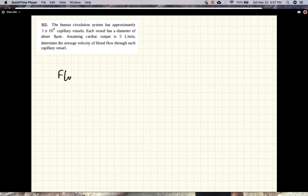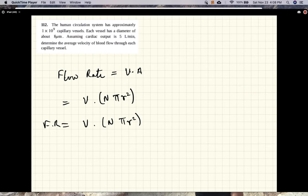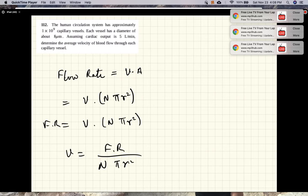Flow rate is velocity times area of cross-section. The blood is split into a billion capillaries with diameter of 8 micrometers. So flow rate equals the velocity times n times the cross-sectional area of each capillary. Therefore, velocity equals flow rate divided by n times pi r squared.